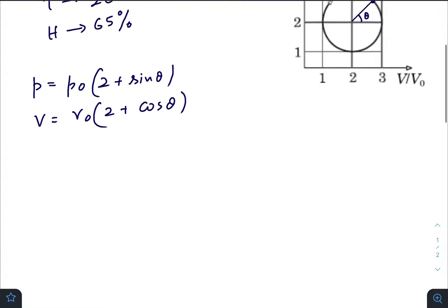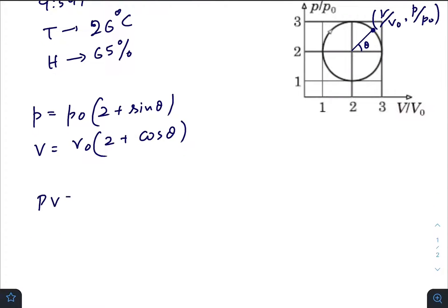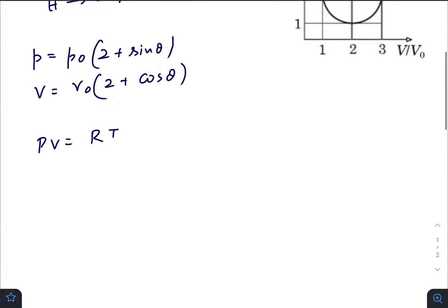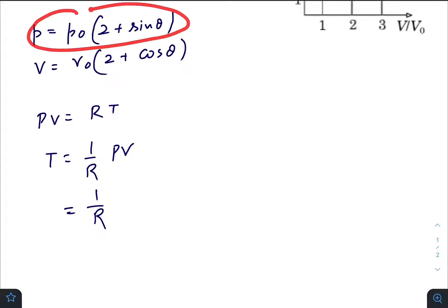As it is already mentioned it is an ideal gas, so pV = RT. So T equals 1 by R times pV. Let us just write down this p and this V in product form.